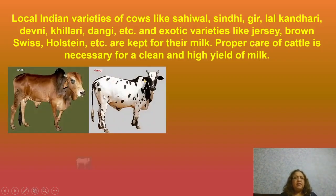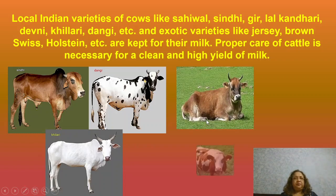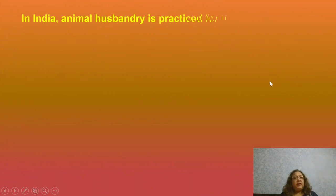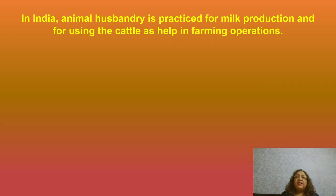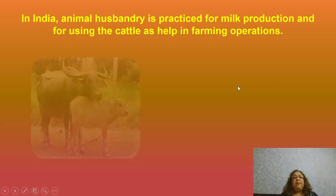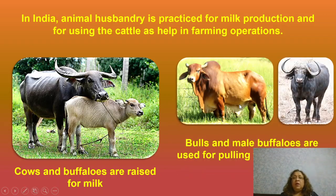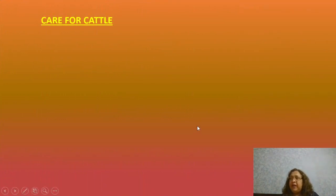These are our Indian varieties of cows, and Jersey, Brown Swiss, and Holstein are the foreign breeds. Now in India, animal husbandry is practiced for milk production as well as using cattle to help in farming operations. Cows and buffaloes are mainly raised for milk, whereas bulls and male buffaloes are used for pulling heavy loads in farming.